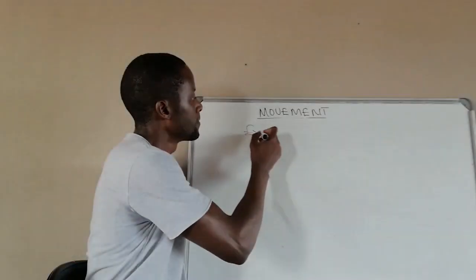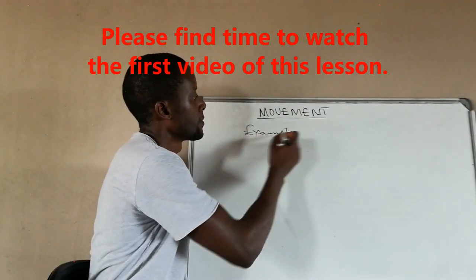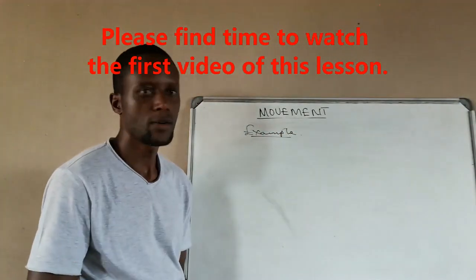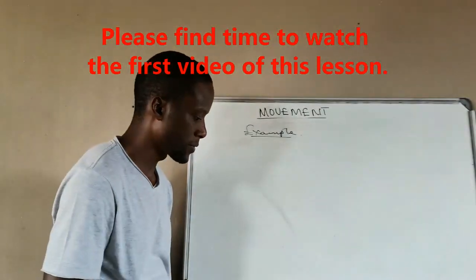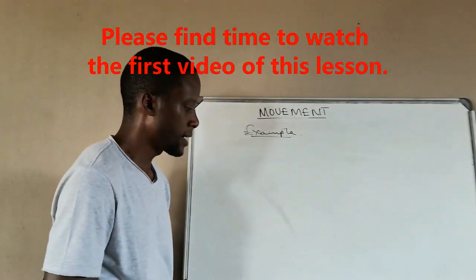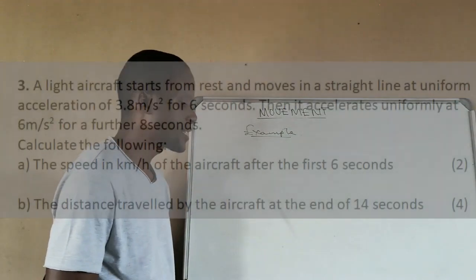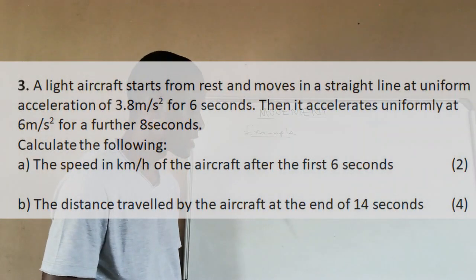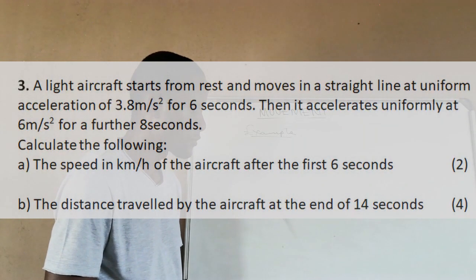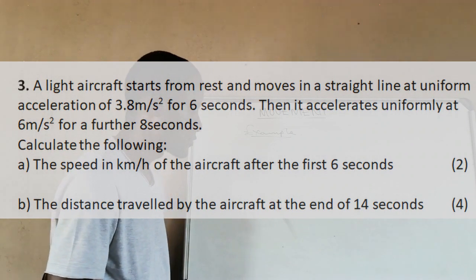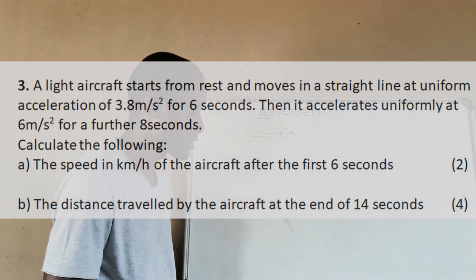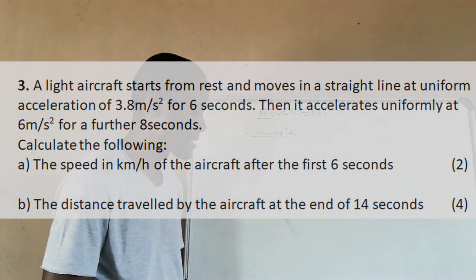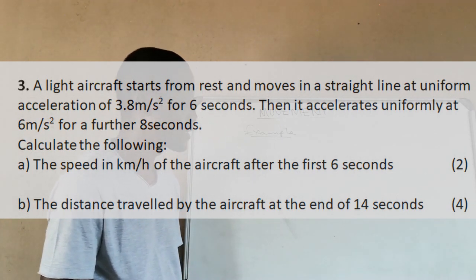For our example, here's a question that might be interesting. A light aircraft starts from rest and moves in a straight line at uniform acceleration of 3.8 meters per second squared for six seconds, then it accelerates uniformly at six meters per second squared for a further eight seconds. Calculate the following.